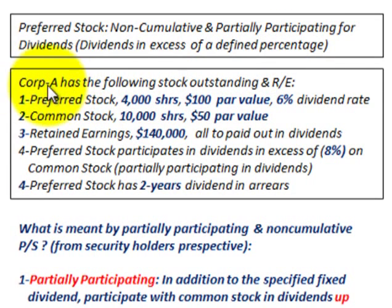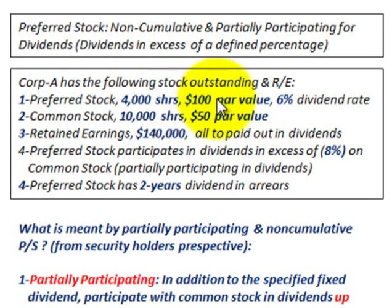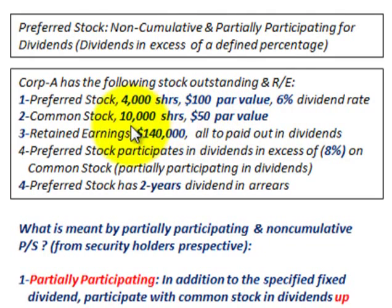Our example here is where Corporation A has the following stock outstanding and retained earnings. They're going to have preferred stock — 4,000 shares at $100 par value at a 6% dividend rate. Common stock — 10,000 shares at a $50 par value. Retained earnings total $140,000, and all are going to be paid out in dividends.